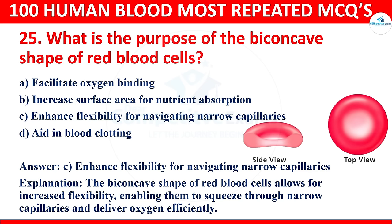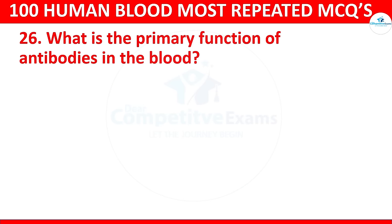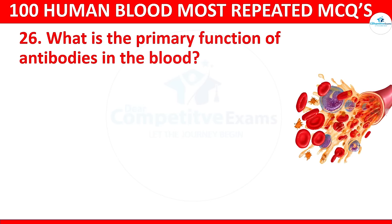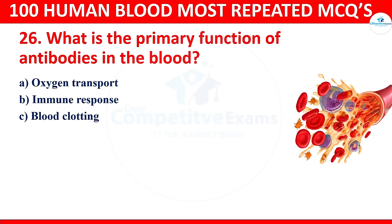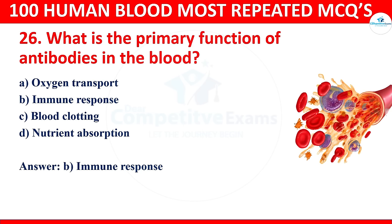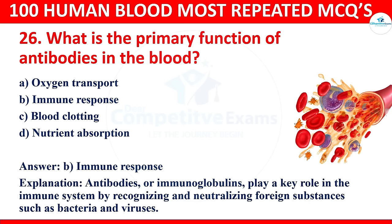Question 26: What is the primary function of antibodies in the blood? Options: oxygen transport, immune response, blood clotting, or nutrient absorption. The correct answer is immune response. Antibodies, or immunoglobulins, play a key role in the immune system by recognizing and neutralizing foreign substances such as bacteria and viruses.